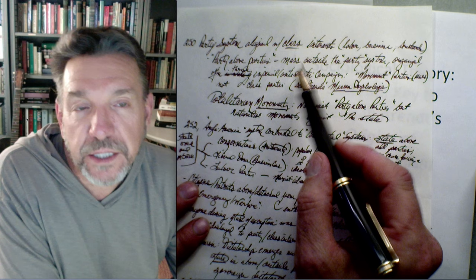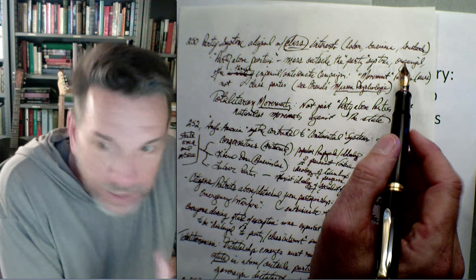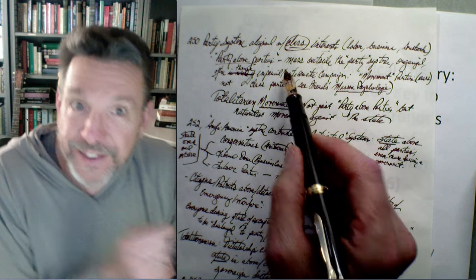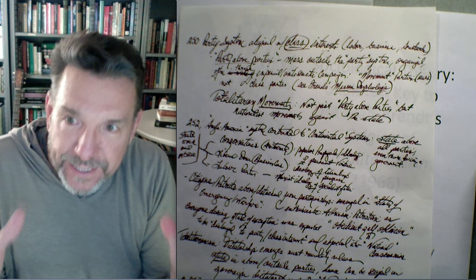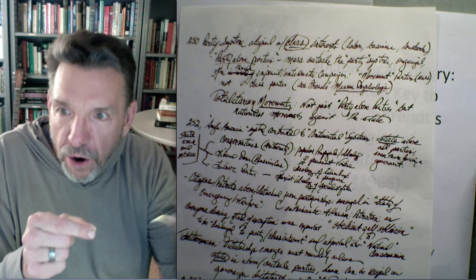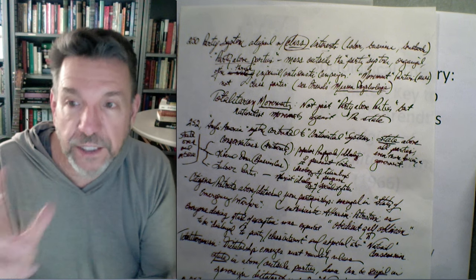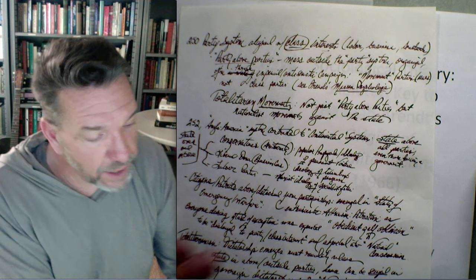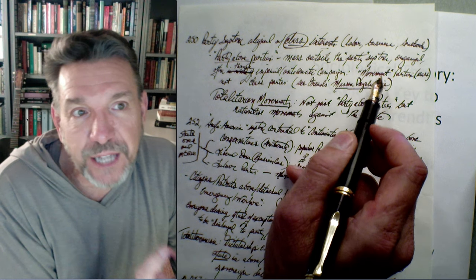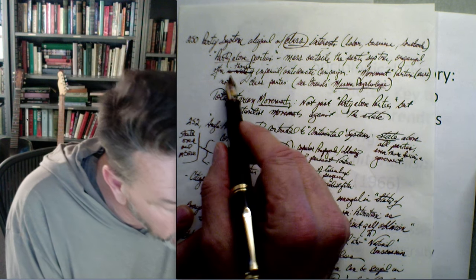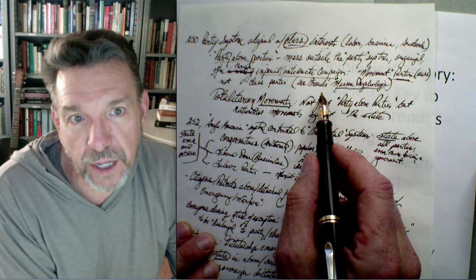Jumping ahead to page 250: the party system aligned with class interests — labor, business, the aristocratic state — is replaced by a party above parties that emerges instead. In a two-party system like Britain, it was harder for a racist, nationalist party above parties to emerge and gain power. But it was easier in a parliamentary system with many parties, where it was easy to pull together a mass outside the current party system — a party above parties organized through imperial and anti-Semitic campaigns, creating a movement party, a mass party instead of a class party.